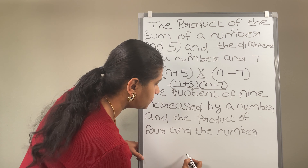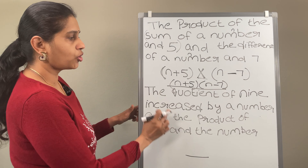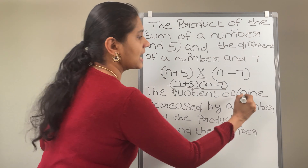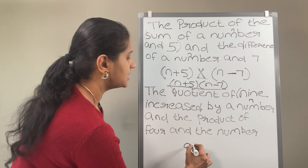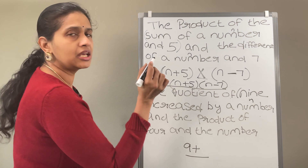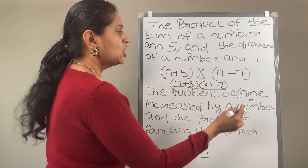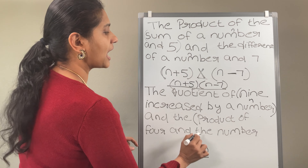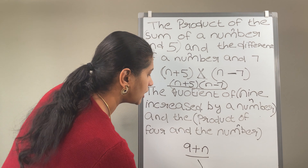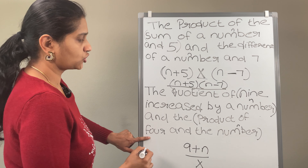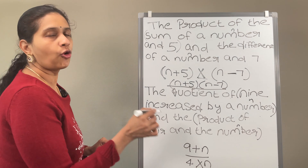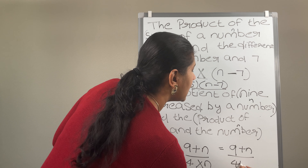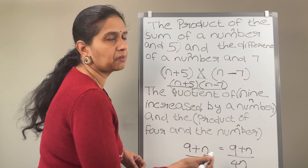The quotient — quotient means division — of 9 increased by a number. Consider n as the number. 9 increased by a number means 9 plus n. And the next statement: the product of 4 and the number. Consider n as the number. The product means multiplication — product of 4 and the number, so 4 times n, which can be written as 4n. This can be written as 9 plus n divided by 4n.